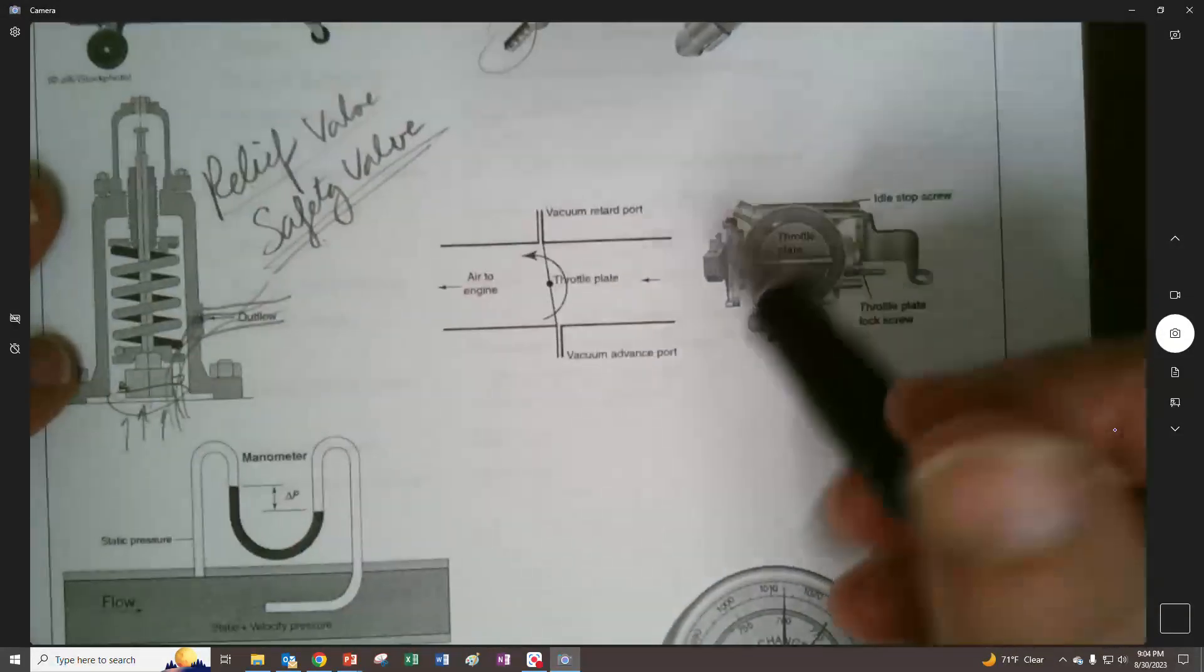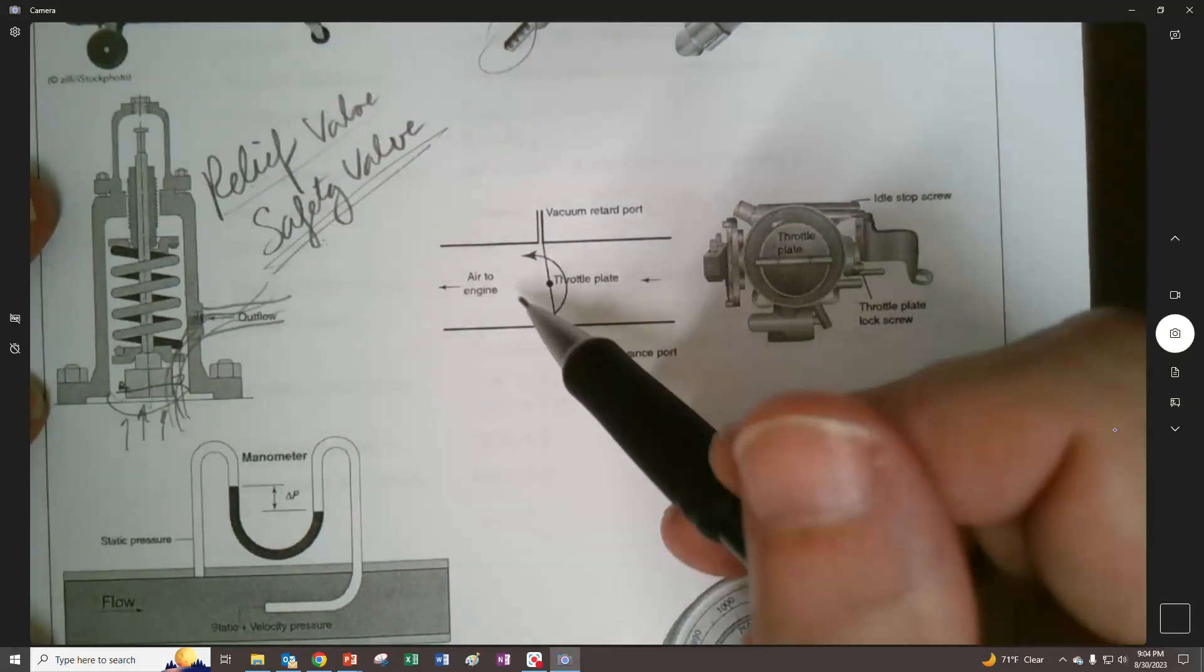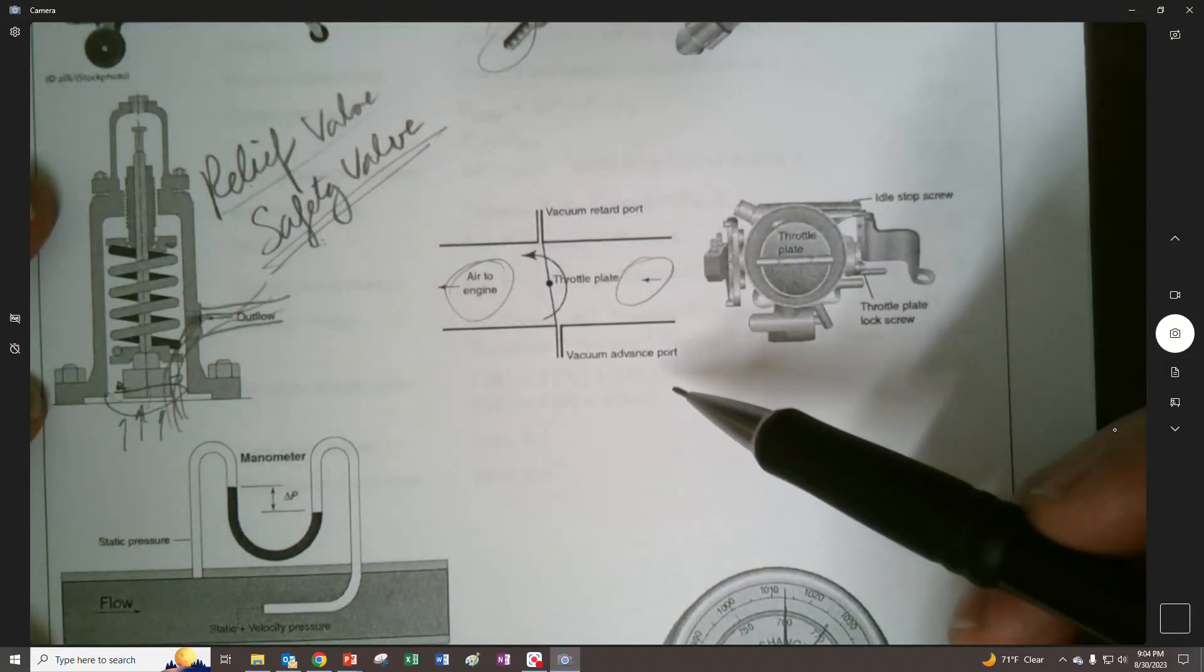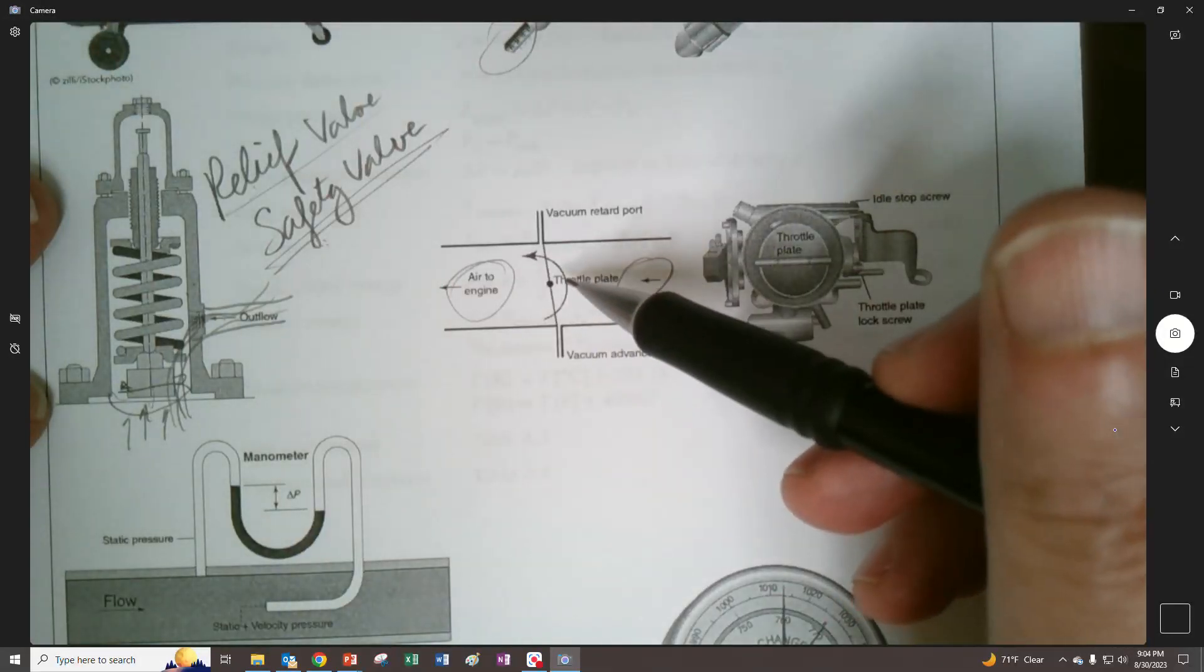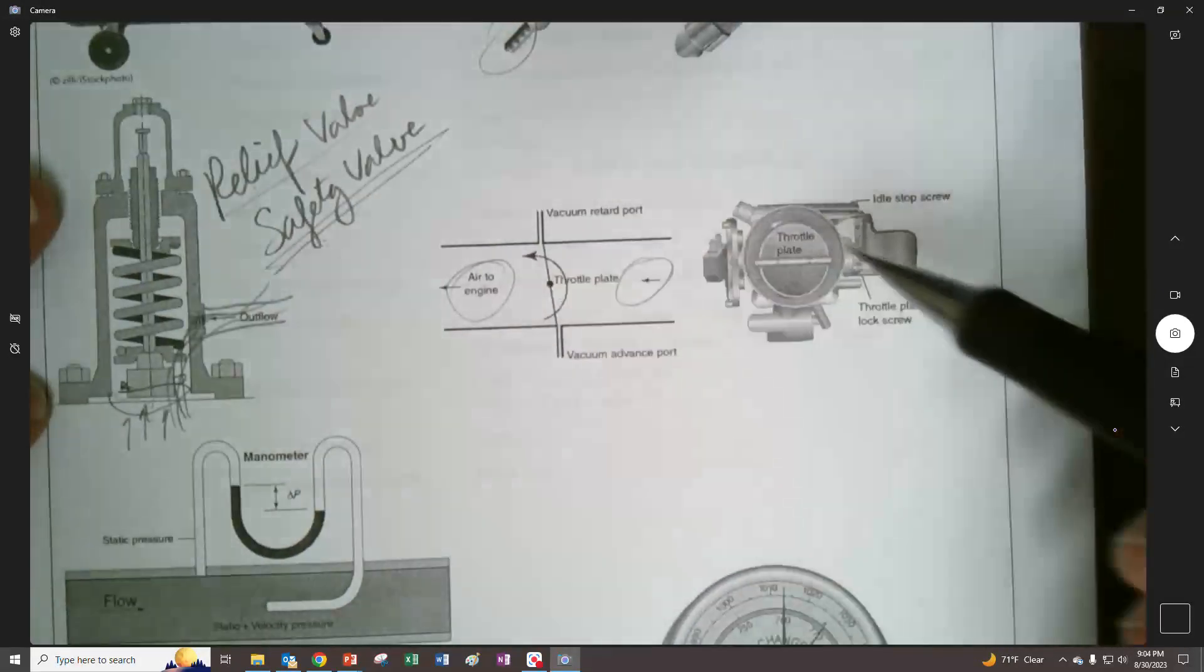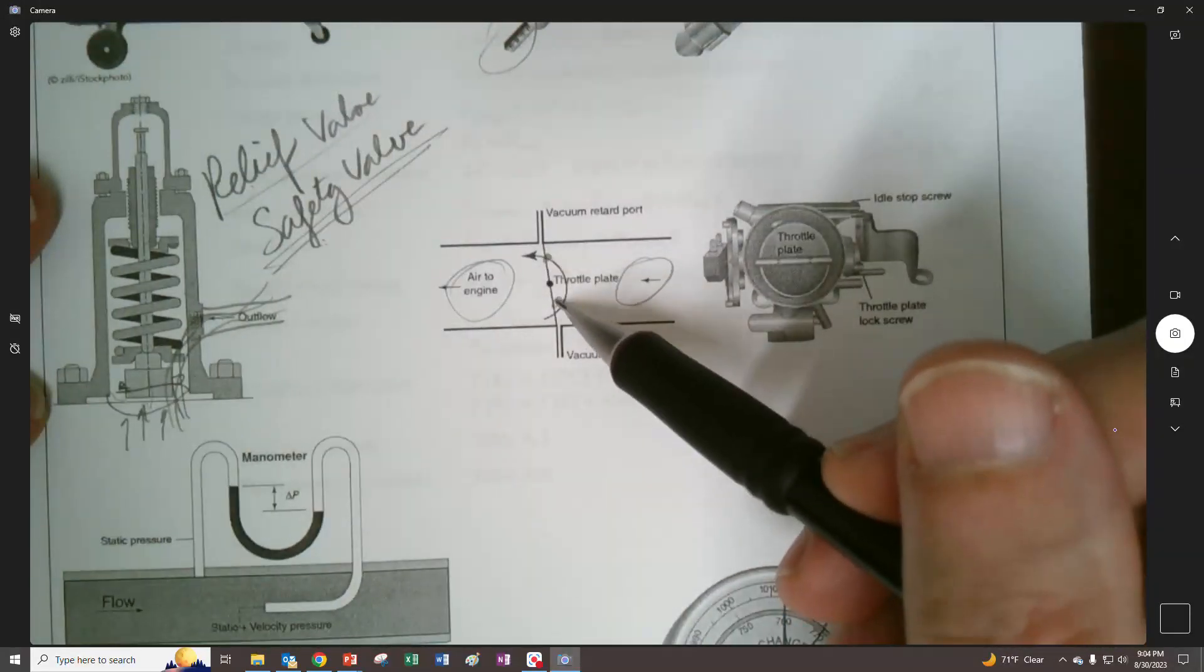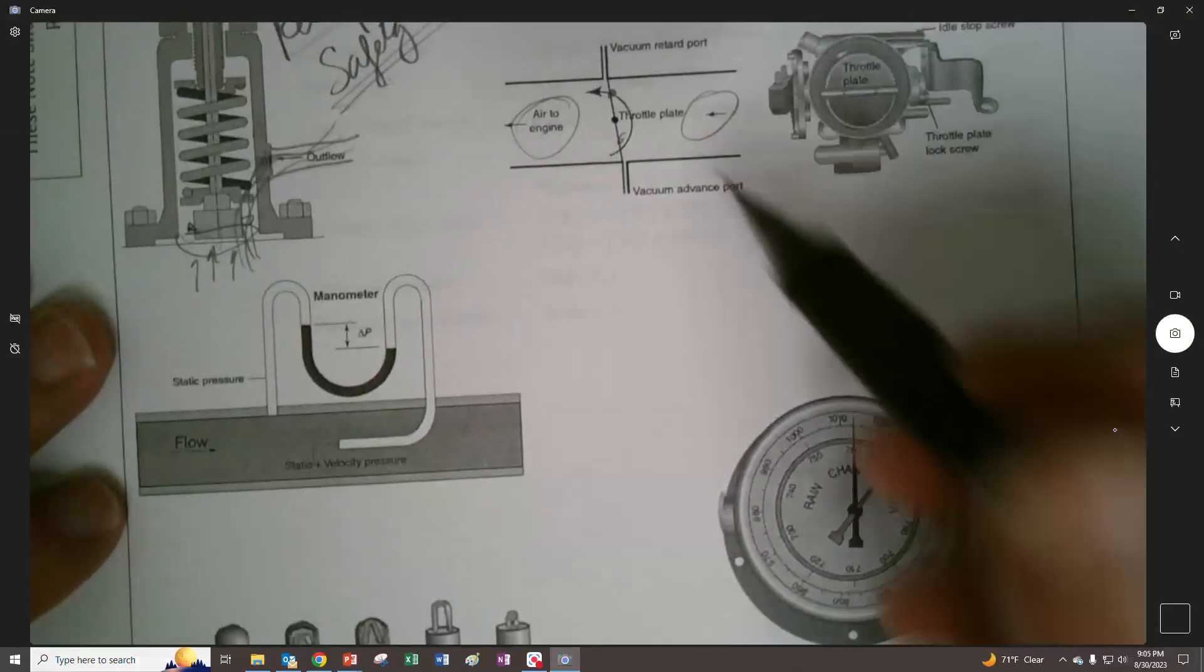Other applications, we might have a throttle. A throttle opens and closes and restricts the air that's going to an engine and that enables us to control the speed of the engine, maintain the speed of the engine. And also they have like little tiny holes in them sometimes so they can have like a little bit of bypass going on there.